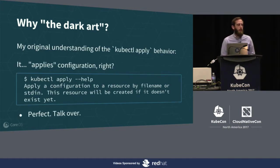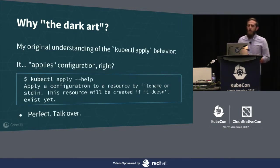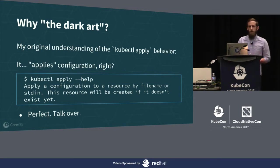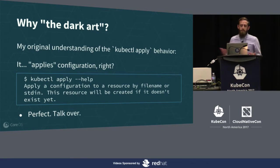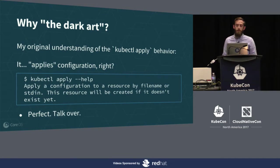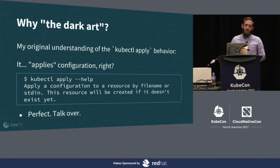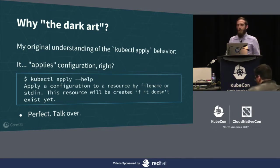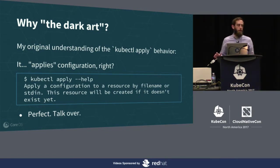My original understanding of kubectl apply behavior was essentially: it's taking configuration that I have locally and it's applying it to the cluster. And that was about it. If you look at the help text of the apply command, it says something similar: "Apply a configuration to a resource. This resource will be created if it doesn't exist yet." But in actuality, there's a ton of behavior underneath kubectl apply.